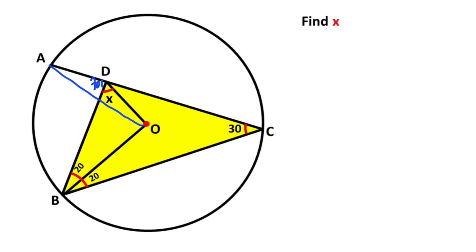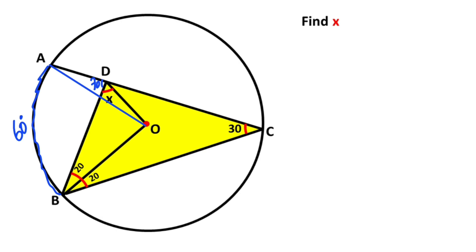Next, if we connect point A and point O, these two lengths are also radii. If the inscribed angle is 30 degrees, this arc must equal 60 degrees. So if the arc is 60 degrees, that means the central angle is also 60 degrees.